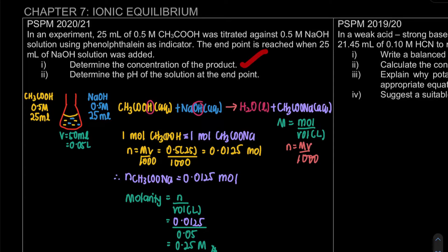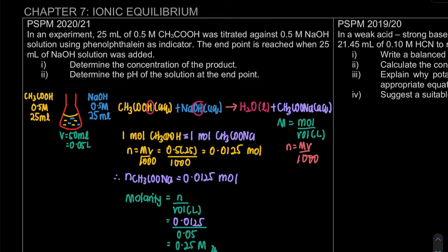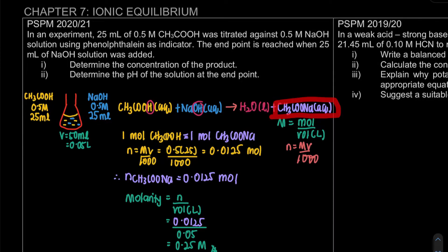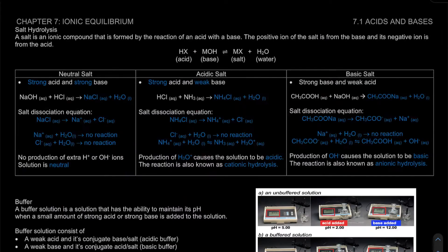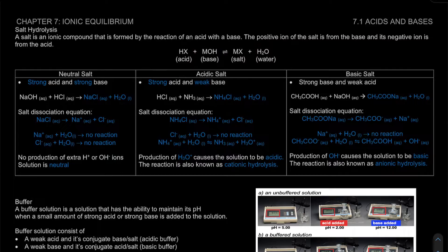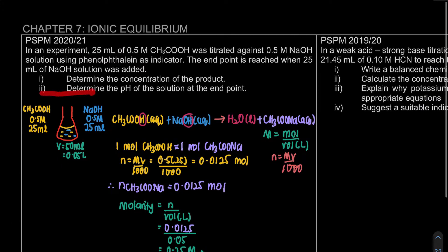The next part is to determine the pH of the solution at the end point. At the end point, we have CH3COONa and H2O. This involves salt hydrolysis, which is a revision of section 7.1 on page 9. We write the salt dissociation equation, dissociating CH3COONa into its separate ions, and then react with H2O.